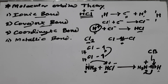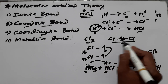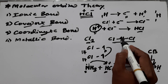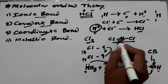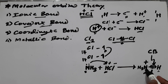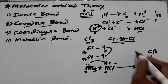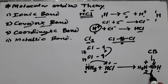So coordinate bond is a covalent bond, but both electrons are shared by one element rather than two. In the covalent bond example — Cl2 — both electrons are shared by both elements, one from each. In the coordinate bond, both electrons come from nitrogen alone. This is the major difference between the coordinate bond and the covalent bond.